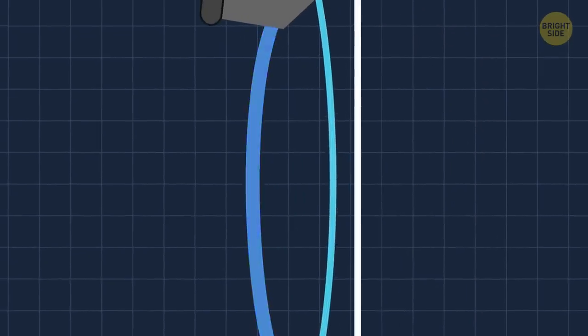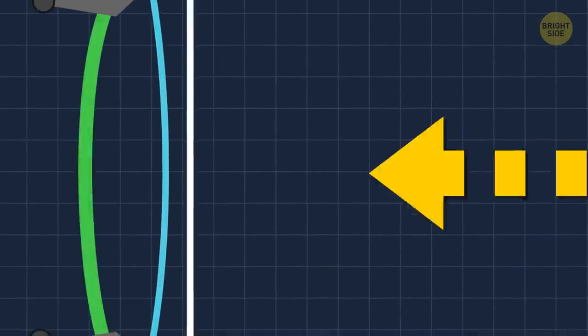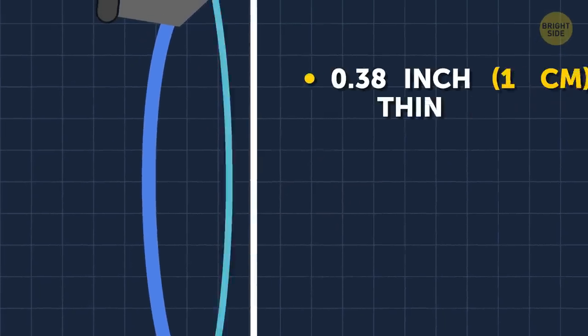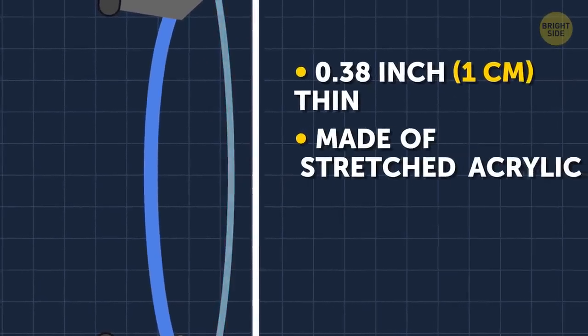In such an extremely rare event, the second pane will hold the cabin pressure instead. The inner pane is about a third of an inch thick and is made of stretched acrylic.